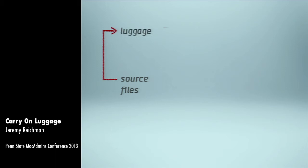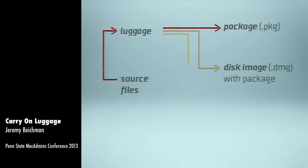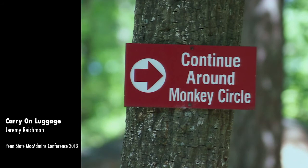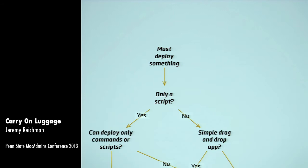We start with source files, then run them through the Luggage process using Make. This results in an installer package, which can optionally be wrapped in an archive format. If a new version of the same files must be repackaged, we just feed them back through the same process, possibly with minimal changes. Since Make can run arbitrary scripts, we can also envision other possible targets for the installers we build — you could send them to a remote server or anything you can imagine. With Luggage, we can rebuild the package using the same set of instructions as before.